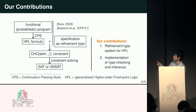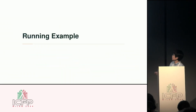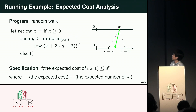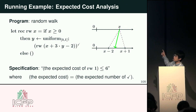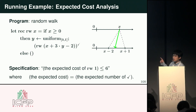I'm going to explain the workflow following this diagram. As a running example, we consider a probabilistic program of random walk. Here, x is the current position, and for each step, the next position is sampled from the uniform distribution. As a specification, we consider the expected cost. Specifically, we want to verify that if the initial position is one, then the expected number of steps is at most six.